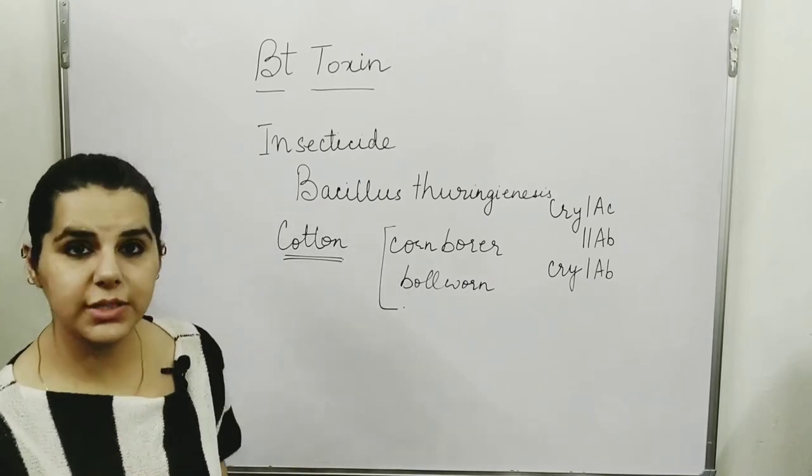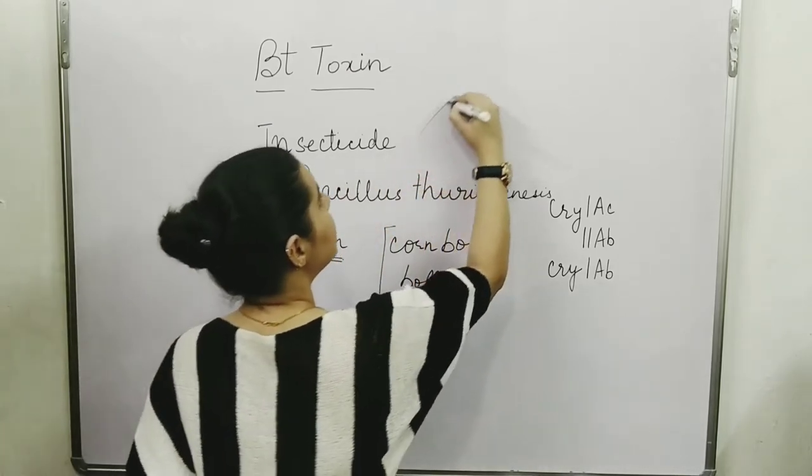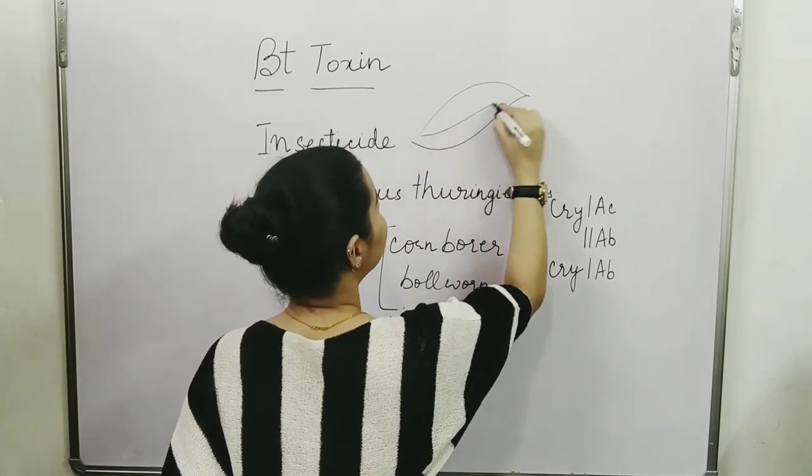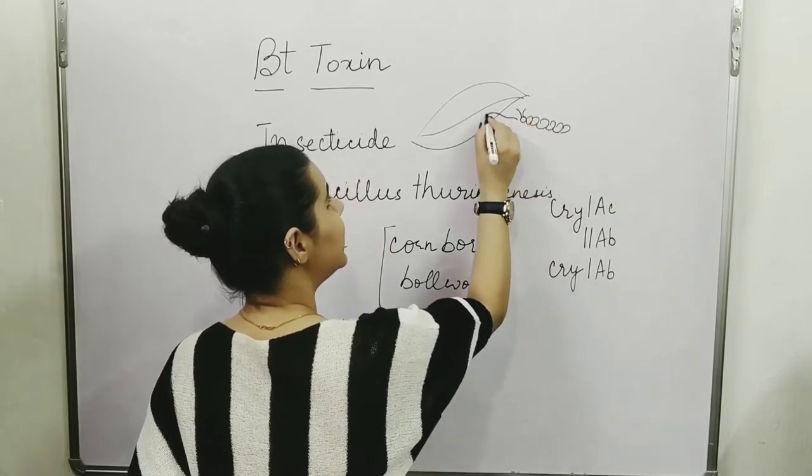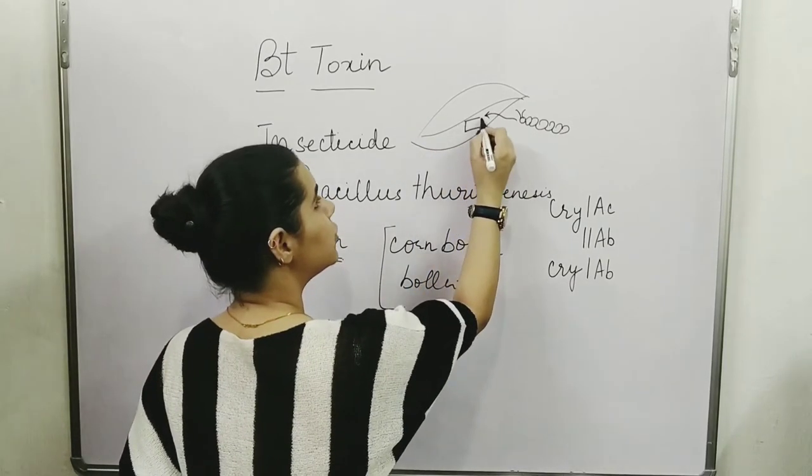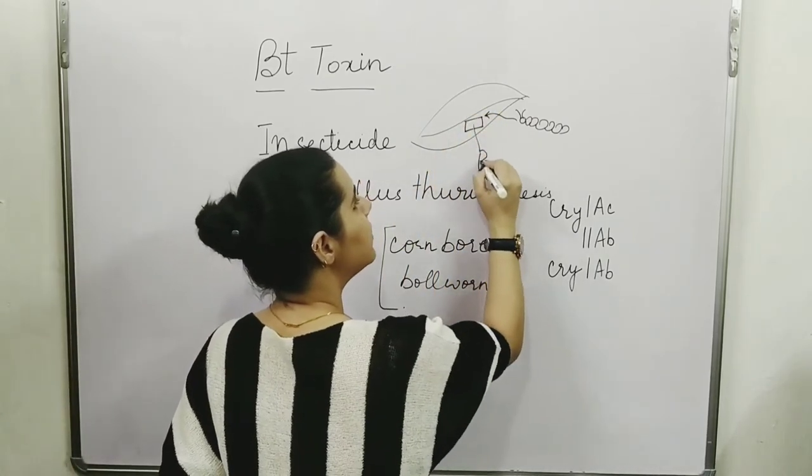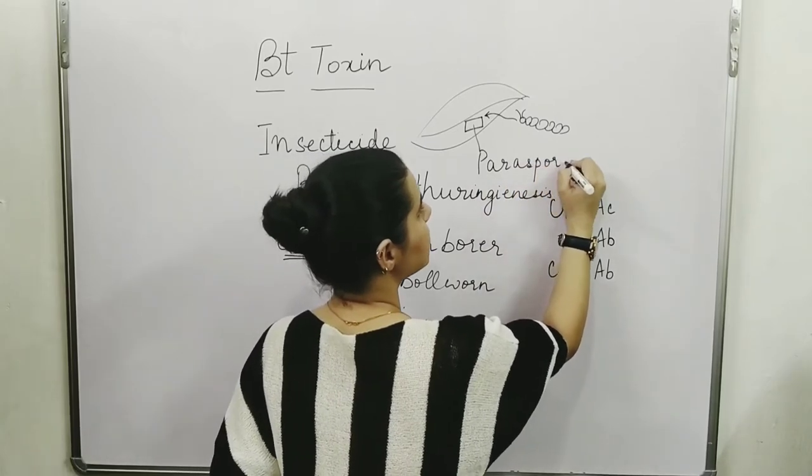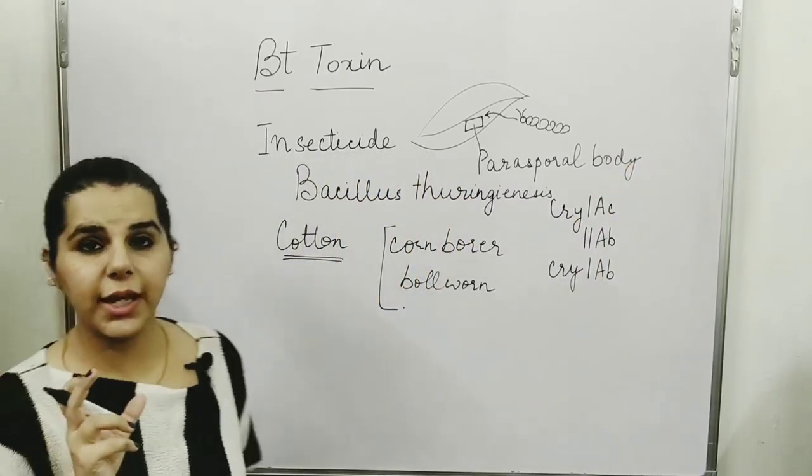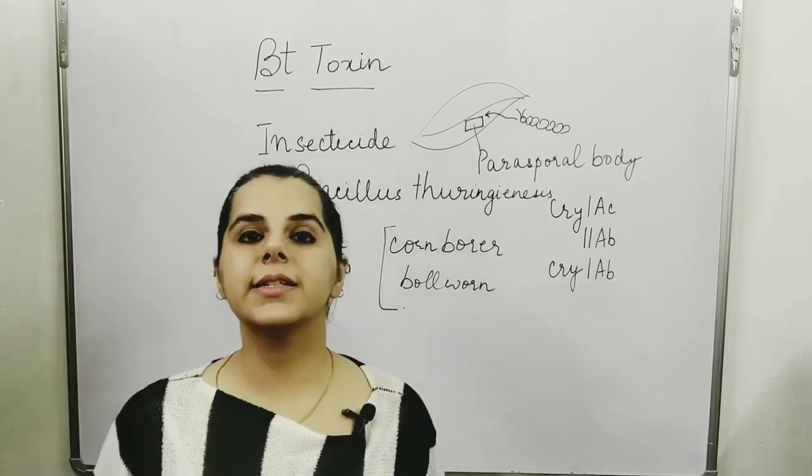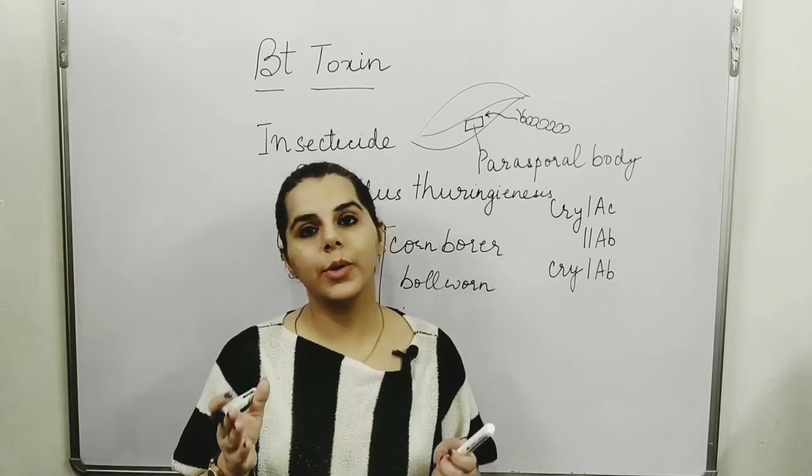We integrate the gene of BT toxin into the cotton plant. So what happens is when a larva comes to this leaf to eat it, in this leaf a BT toxin parasporal body is synthesized. Now the parasporal body is the crystal protein because the toxin is in crystalline form, so it is called crystal protein.